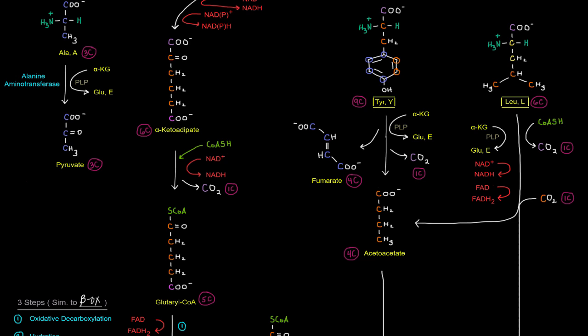Now we can also get that acetoacetate from leucine. So these four orange carbons here, three of them come from right here on leucine. And in going from leucine to acetoacetate, we have to get rid of the amino group in a transamination reaction here.